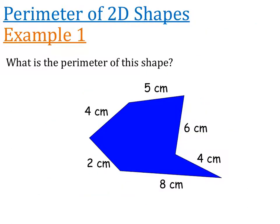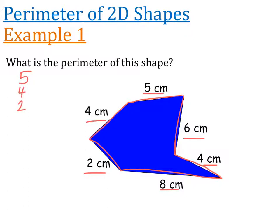In this next question there are no shortcuts. We just go around the entire shape and add all the sides. There are 6 sides to add: 5 plus 4 plus 2 plus 8 plus 4 plus 6. Adding those together gives 29, so the perimeter of this shape is 29 centimetres.